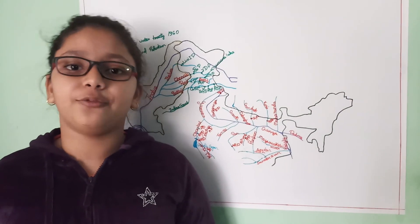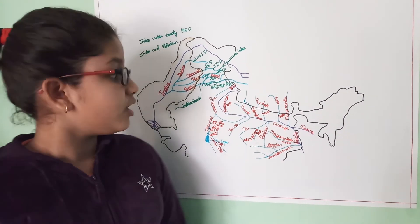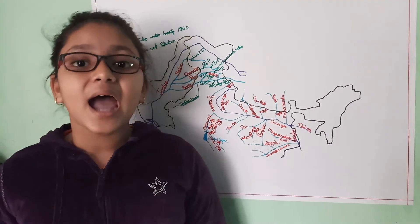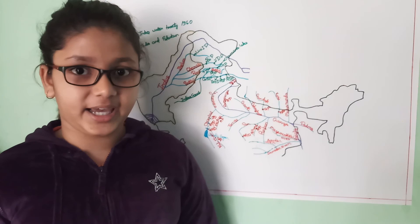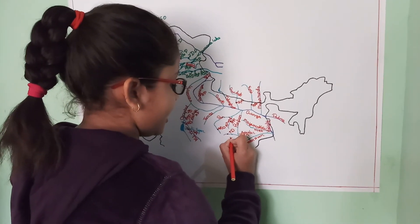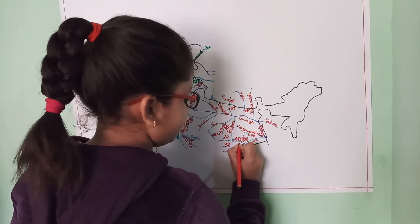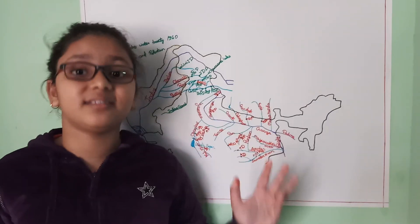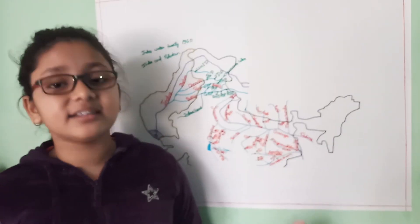Then comes the Damodar Valley project. Its main initiative is flood control in the prone areas of Jharkhand and West Bengal. It is the first river valley project and the total power capacity is 1181 megawatt. There are four dams: the Tilaya Dam, the Konar Dam, the Maithon Dam, and the Panchet Hill Dam. There are also three thermal power stations at Durgapur, Bokaro, and Chandrapura, and the beneficial states are Bihar, Jharkhand, and West Bengal.